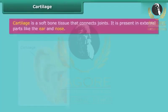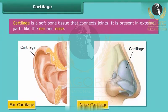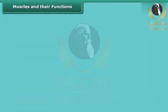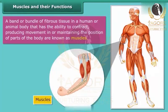Cartilage is a soft bone tissue that connects joints. It is present in external parts like the ear and nose. A band or bundle of fibrous tissue in a human or animal body that has the ability to contract, producing movement in or maintaining the position of parts of the body, is known as muscle.